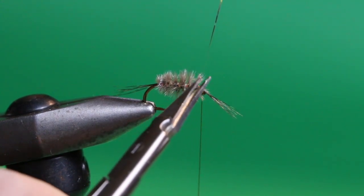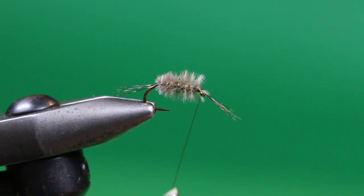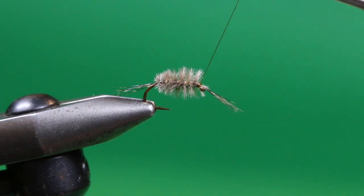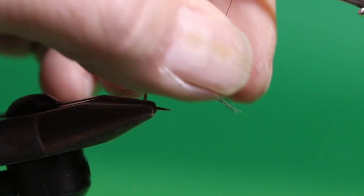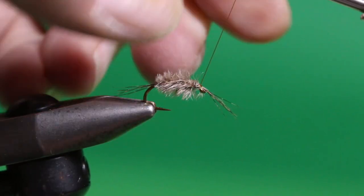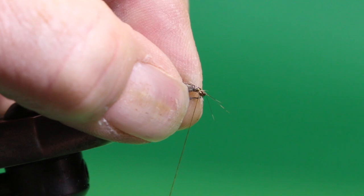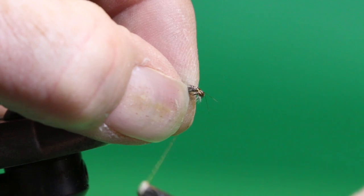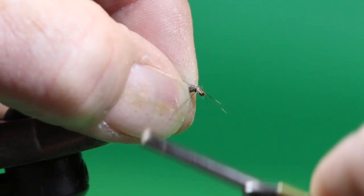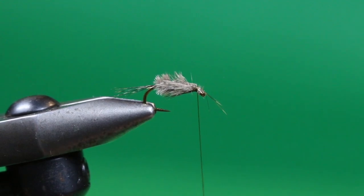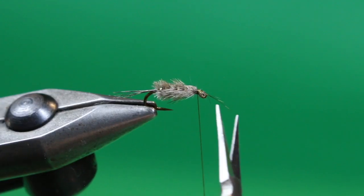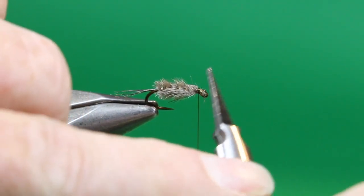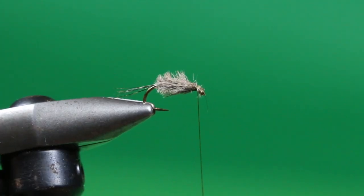I'm going to come in, trim away the excess, and take my tying thread right up to that hook eye. Take the thread and hold it up. I've moistened my fingers so I can help sweep everything back. I'm just going to carefully sweep those fibers back underneath the hook. You can play with this a couple of times until you get it where you want it. I've got a few fibers that don't want to come along, so we have a cure for that called scissors. I will just trim away those errant fibers.